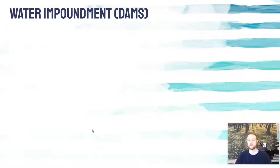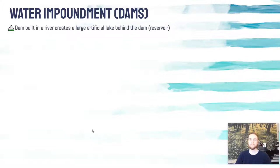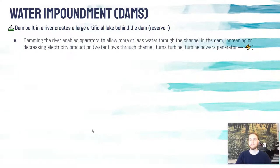First, we'll talk about by far the most popular way of generating hydroelectricity, which is water impoundment. Water impoundment is just a fancy word for a dam. We're going to store water behind a dam, which will basically create an artificial lake, known as a reservoir. When we dam the river, it enables us to control the flow of the water.